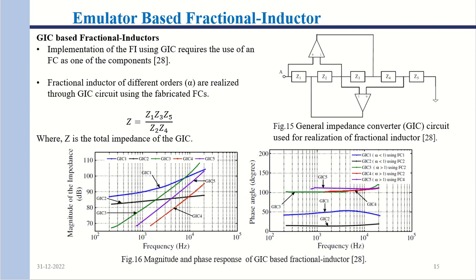Specifically, replacing Z1, Z3, and Z5 with resistors, Z2 with a resistor, and Z4 with a fractional capacitor gives Z = (R·R·R) / (R · (1/C·s^α)). This causes s^α to move to the numerator as Z1·Z3·Z5·C·s^α, which corresponds to the impedance of a fractional inductor.